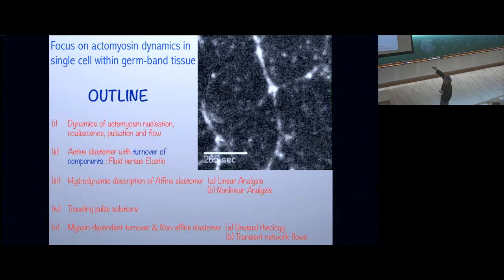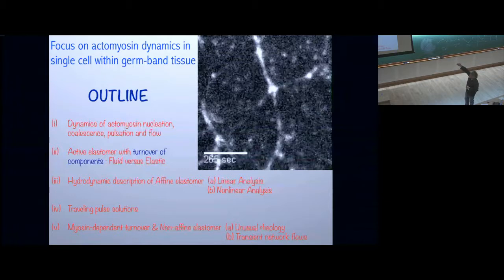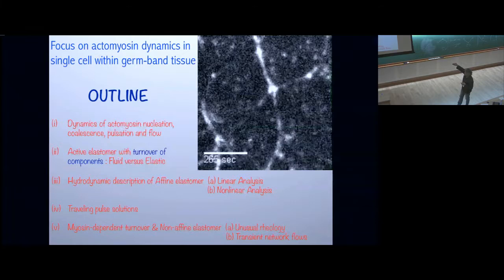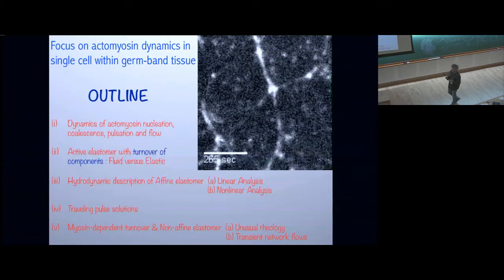To understand this, I'll describe an active elastomer theory — an active elastomer with turnover of its components, namely actin and myosin — and discuss whether such a system should be viewed as a fluid or an elastic system. I'll then describe a hydrodynamic description of an affine elastomer and do some theoretical analysis. This hydrodynamic description gives rise to travelling pulse solutions, and for high active myosin contractility, when the local density of myosin becomes very high, the meshwork of actin rips apart, giving rise to very significant turnover and non-affine distortions of the elastomer.